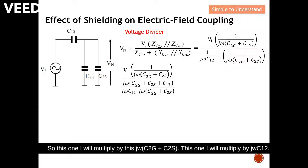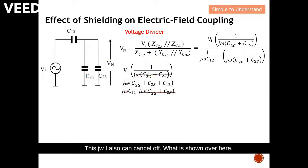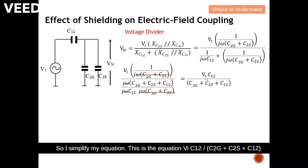Next I take a common factor again. I multiply by jω(C2G + C2S) here, and by jωC12 here, then take the common factor jω. I can cancel jω, and simplifying gives the final equation: Bn = Vin × C12 / (C2G + C2S + C12). This is the noise that couples from conductor one to conductor two with shielding.